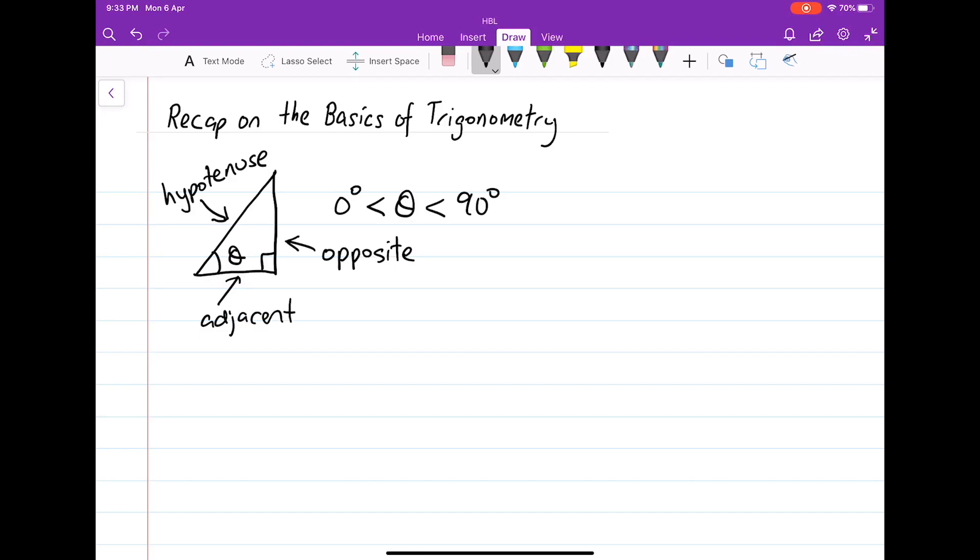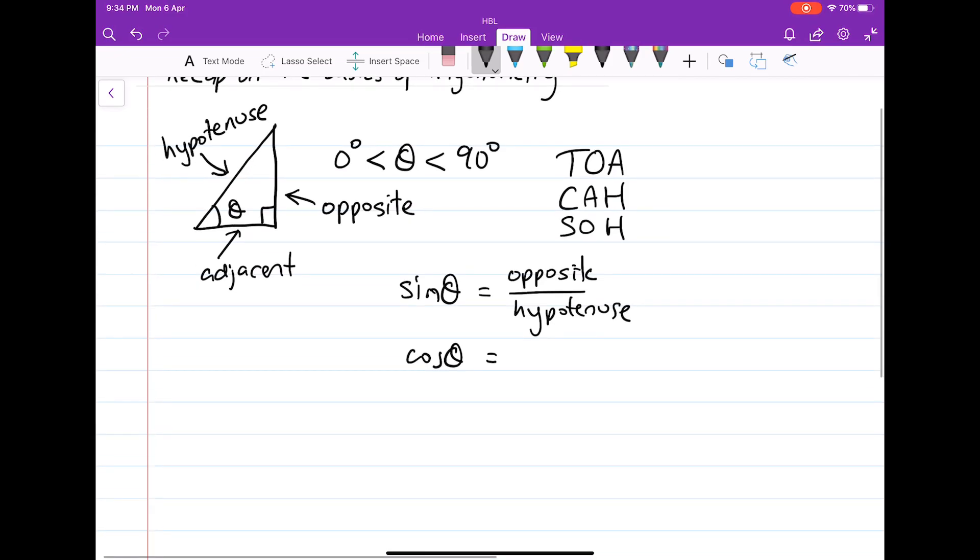You still remember the mnemonic that we use to remember our trigonometric functions: TOA, CAH, SOH. Sin theta equals the length of the opposite side over the length of the hypotenuse. Cosine theta is the length of the adjacent side over the length of the hypotenuse. And tangent theta is the length of the opposite side over the length of the adjacent side.